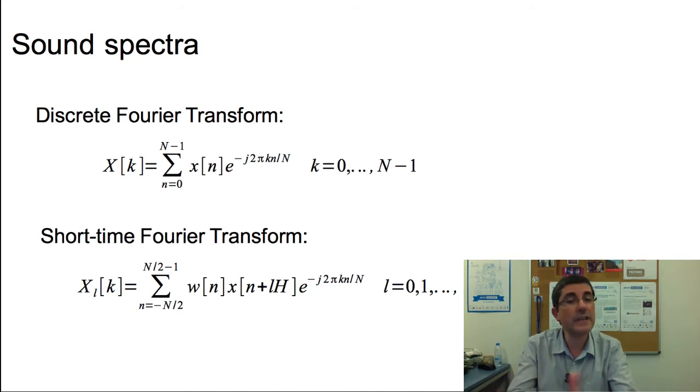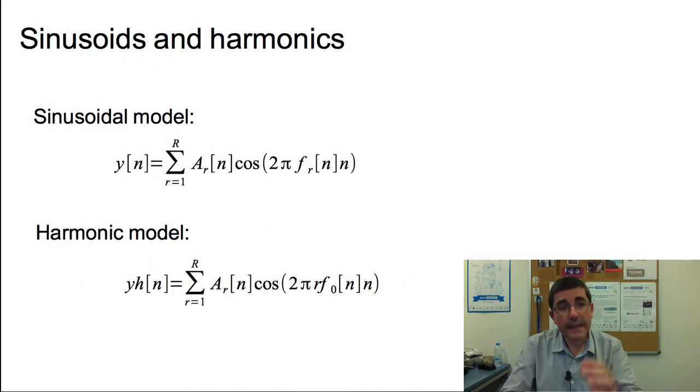And then we went over the time-bearing version of that, which is the short time Fourier transform. So that instead of having a single spectrum, we have a sequence of spectra, and that's the x sub l of k, which is this idea of time varying frequency representation of a sound. And that was, we could consider that as the first model that was useful for us. The first analysis-synthesis model that could capture any sound. In fact, this was an identity system, therefore we could analyze and synthesize any sound.